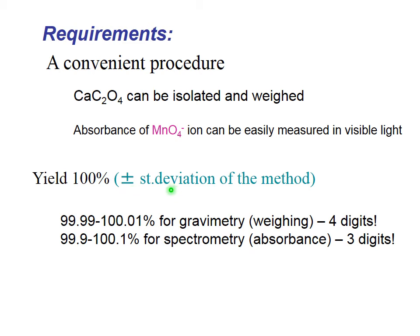What does standard deviation of the method mean? It means that my instruments limit what I can detect. For example, for weighing I use balances that give four digits, so if my deviation is smaller than one-hundredth of a percent, I will not see it on the balance. That's why for gravimetric methods we require four significant digits, and the standard deviation of the method must be less than 0.01%.